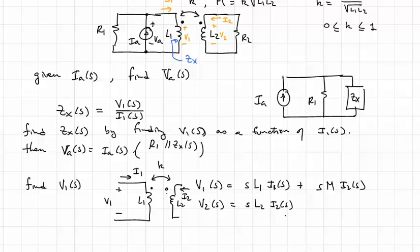But again, because of the mutual coupling between the windings, there's going to be a voltage induced on the secondary winding due to current in the first winding. And that will take the form of S times M times the current in winding 1.